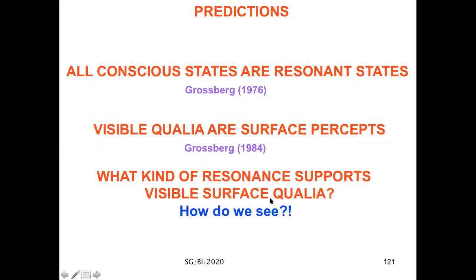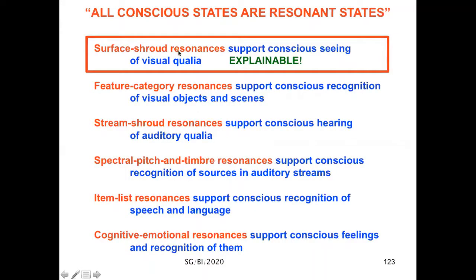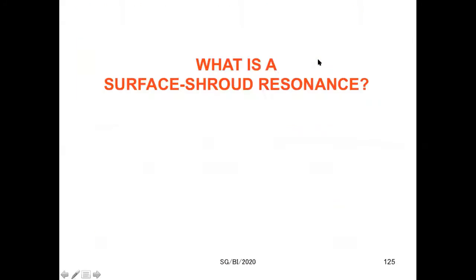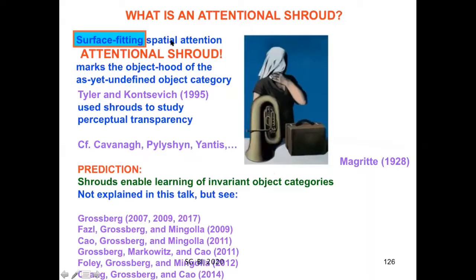Sensitivity to direction of contrast is talking about filling-in of visible color and lightness—it's what we see. Surface perception is where we see conscious visual qualia. In 1984, I was able to assert all boundaries are invisible in the interblob cortical stream, visible qualia are surface percepts in the blob cortical stream, and no contradictory data to this day. So now we can say all conscious states are resonant states and visible qualia are surface percepts. But then we need to ask what kind of resonance supports visible surface qualia, or how do we consciously see? I've been claiming for several years it's due to surface-shroud resonance. Surface-shroud resonances support conscious seeing of visible visual qualia. They are explainable because the surface representations are explainable, whereas feature-category resonances support conscious recognition of visual objects and scenes. So we have this distinction between seeing and knowing. What is a surface-shroud resonance? It's surface form-fitting spatial attention, which has been called an attentional shroud by a number of investigators. I predicted, though, that shrouds enable learning of invariant object categories.